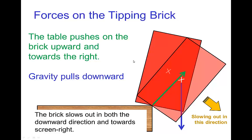What actually happens is, as a brick is tipping over and rotating, there's two forces at work here. There's gravity, which is pulling the brick down, but there's also a force exerted by the table which is pushing up and away.